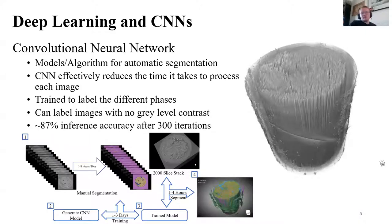We attack these challenges through the utilization of deep learning and convolutional neural networks. The neural networks are models or algorithms that can be used for automatic segmentation. They are first generated, and then we can train them through a set of training images that we ourselves have manually segmented. In our work, we used a set of 14 images. Each image takes anywhere between one to five hours to manually segment. We feed this to our model, and we allow it anywhere between one to three days of training. We then have a trained model, and we can then apply that model to our datasets.